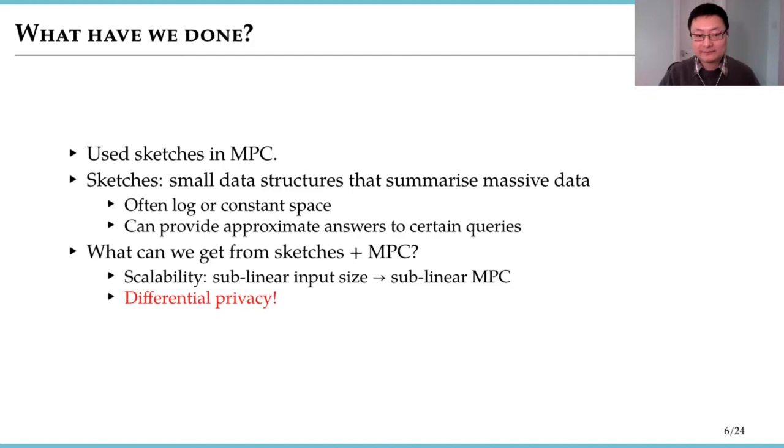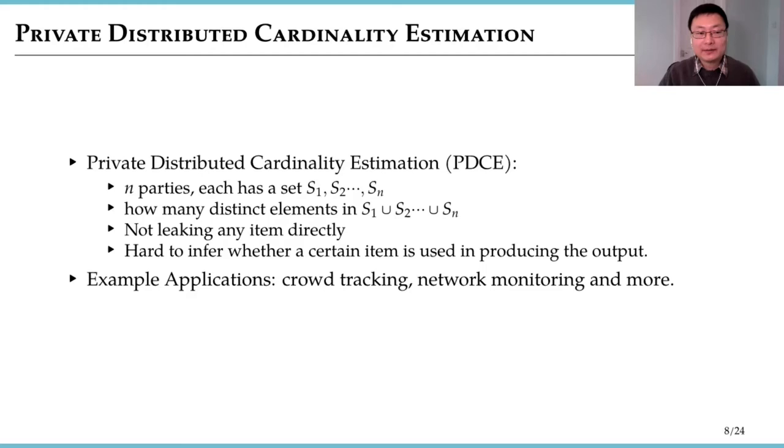Let's talk about the technical details. The MPC protocol in the paper is for the private distributed cardinality estimation problem. The problem is the following: There are N parties, each has a set. We want to find out how many distinct elements in the union of all sets. We also want privacy, which means in the process we don't want to leak any item directly. And we also want to make it hard to infer whether a certain item is used in the protocol to produce the outputs.